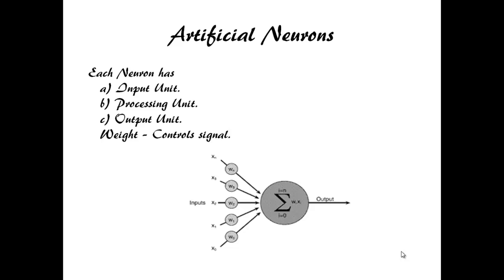They read an input, process it and generate an output. Input is connected to nerve cell through weight. Weight is a number that controls the signal.